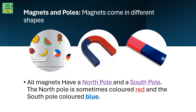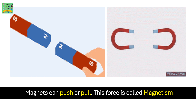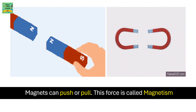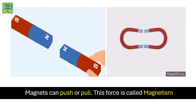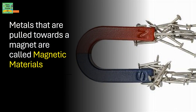Magnets come in different shapes. All magnets have a north pole and a south pole. The north pole is sometimes colored red and the south pole is colored blue. Magnets can push or pull — this force is called magnetism. Metals that are pulled towards a magnet are called magnetic materials.